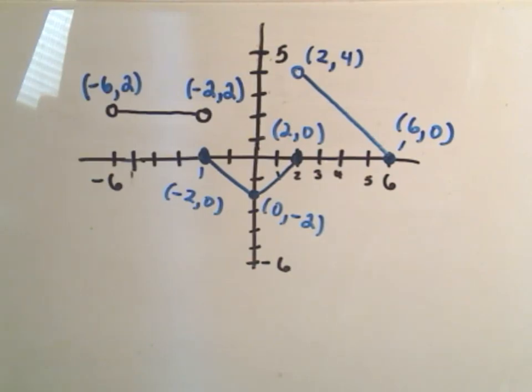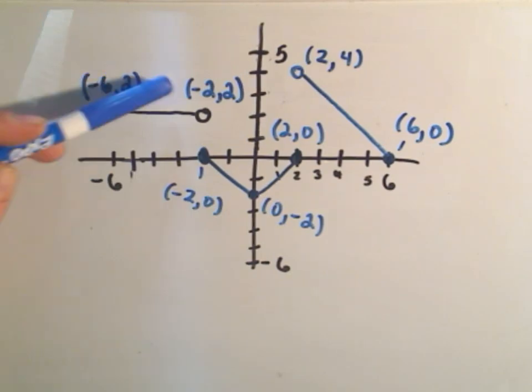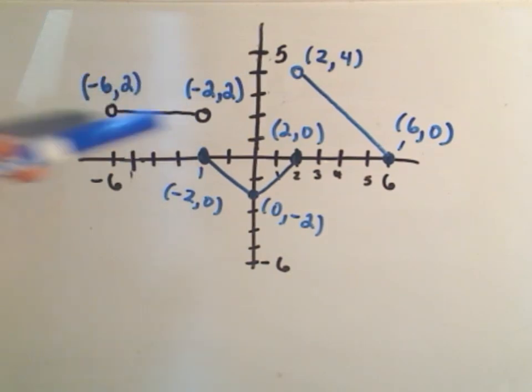So I tried to fill in the endpoints. Open circle, this is the point (-6, 2), and then this is the point (-2, 2), again open circle. So this is supposed to be a flat line.